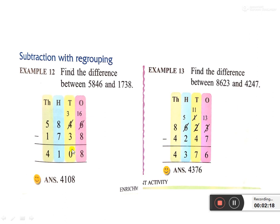We start from the ones place. Can you do 6 minus 8? No, we cannot, because the upper number is smaller. So we borrow 1 ten from the neighbor. The tens digit 4 becomes 3, and 6 becomes 16. Now: 16 minus 8 is 8, 3 minus 3 is 0, 8 minus 7 is 1, 5 minus 1 is 4. Answer is 4108.